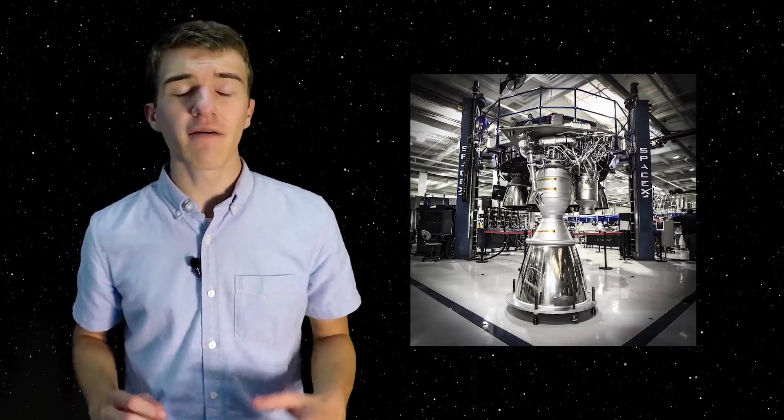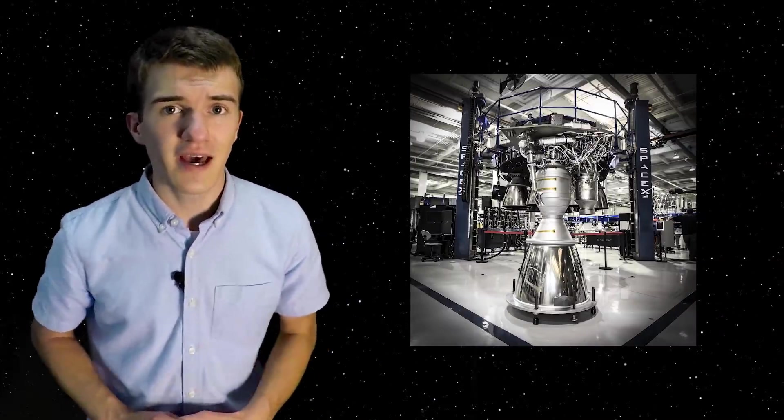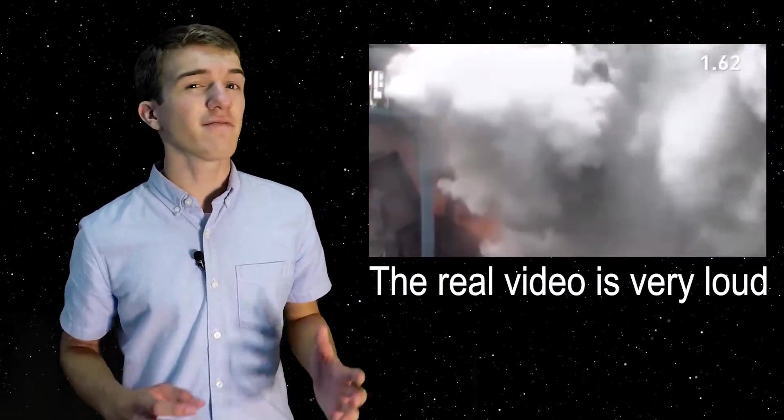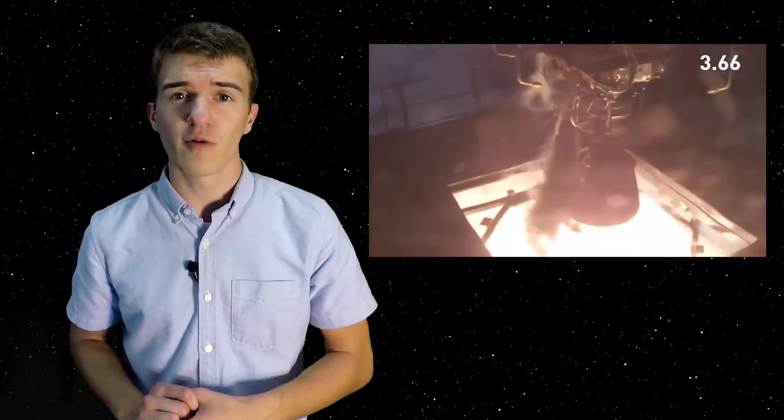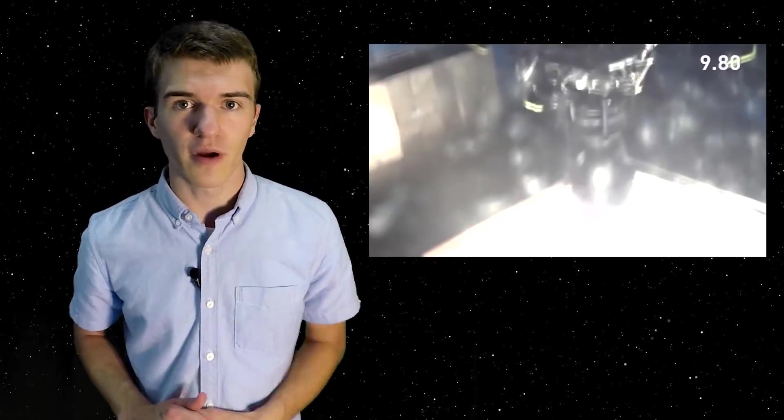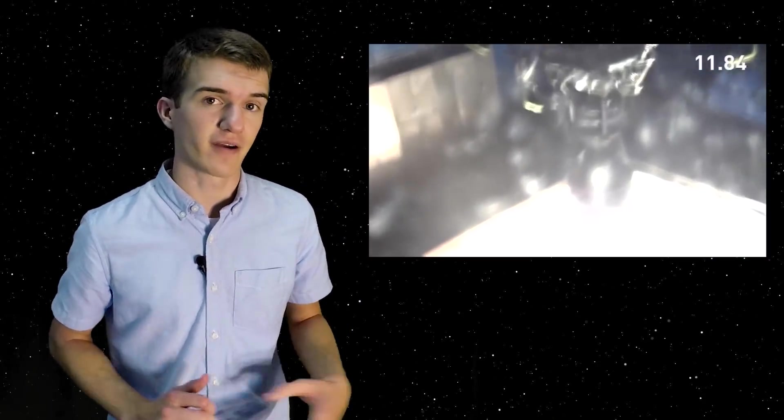Now another project at the time SpaceX had been working on was the Merlin 1D engine, which would be an upgrade from the Merlin 1C. This engine is actually used currently in the Falcon 9 and Falcon Heavy rockets, and has a 50% upgrade from the Merlin 1C before. Now there have been more iterations since then, however at the time this was a big upgrade to the rocket they had been using for the Falcon 9.